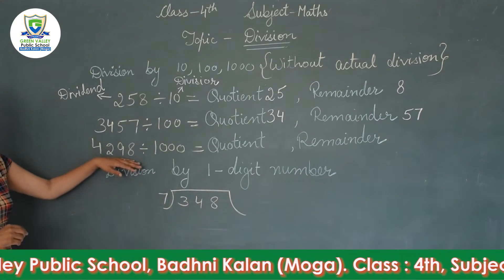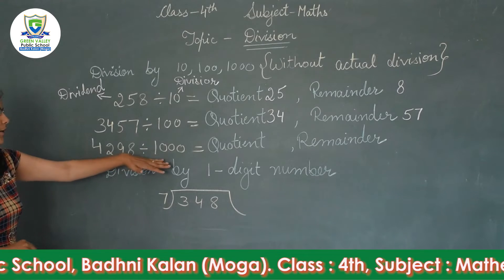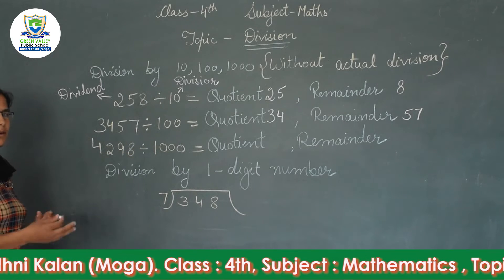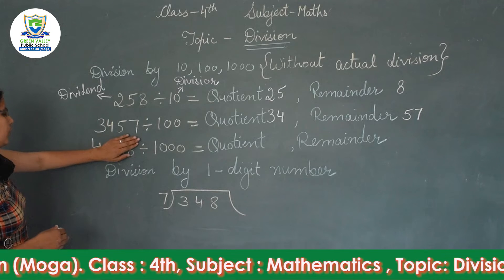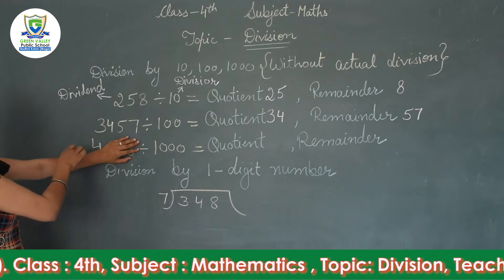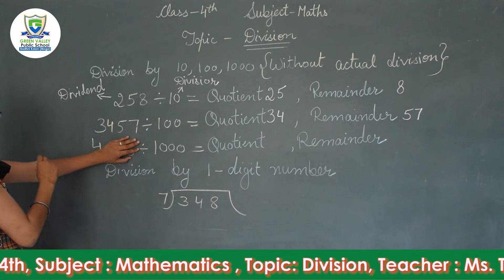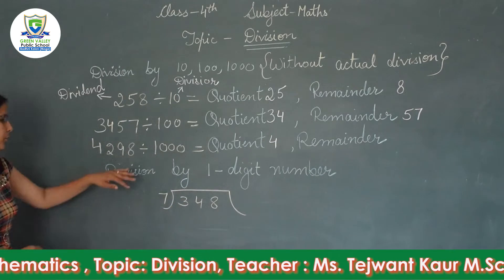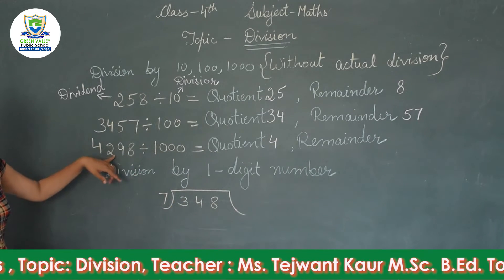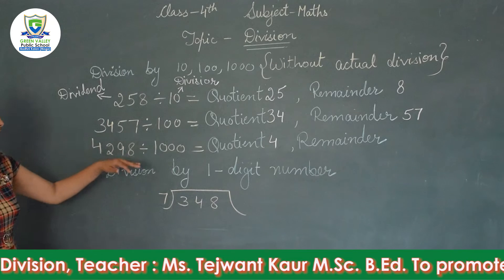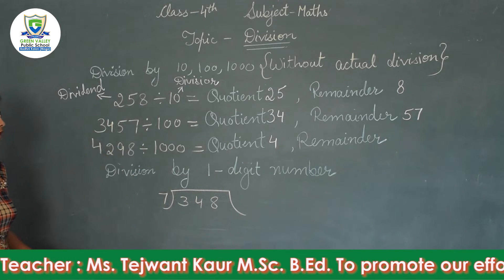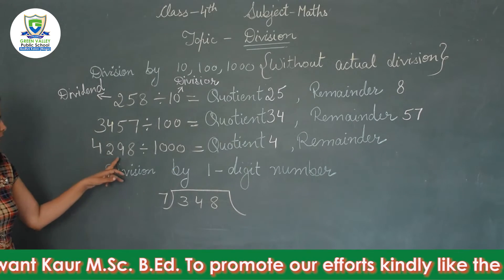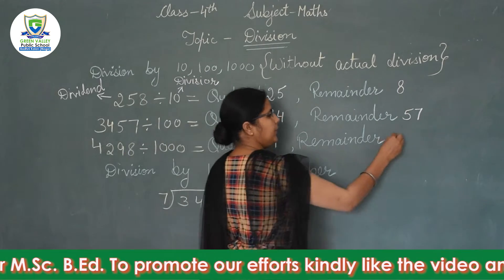Next we have 4298 divided by 1000. When we divide by 1000 we remove three digits. So the quotient is 4 and 298 is the remainder.